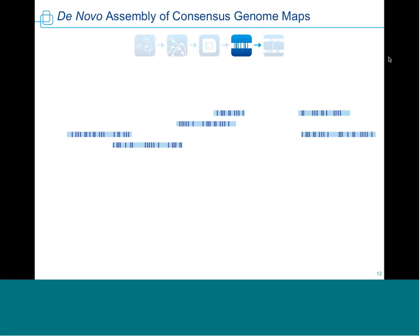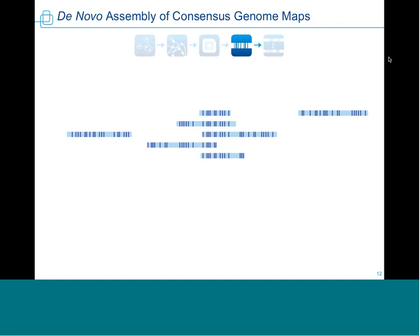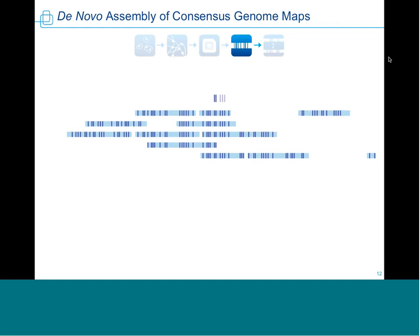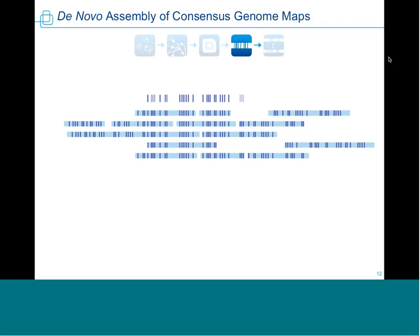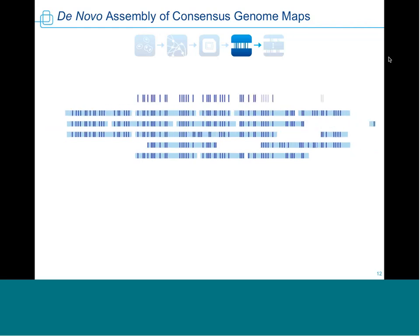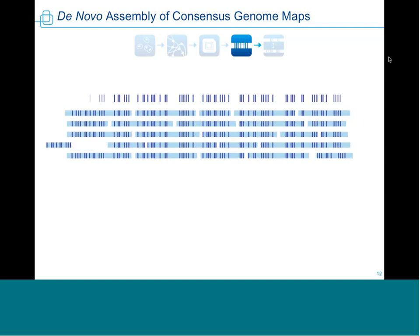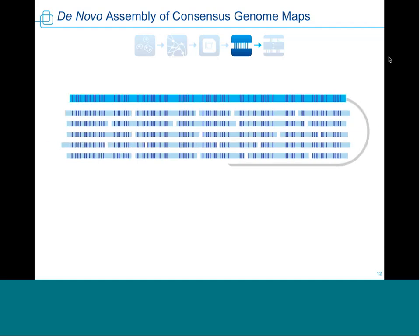Here's a brief outline of my talk. I plan to tell you about our CHM1 project and give an overview of what we've done so far. I'll give examples of regions that have been resolved in the current reference using the single haplotype source, and I'll tell you about the BioNano genome map and how we've used it to assess and validate our whole genome assembly.